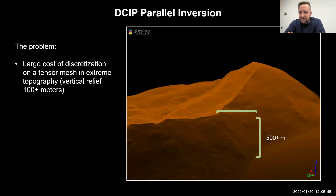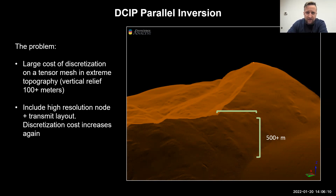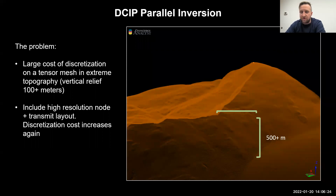Diaz's acquisition system is a distributed 3D DCIP system. This makes it particularly useful in extreme topographies — we just have to lay out the configuration once, come back and pick it up, going over multiple mountains or one big mountain. With a topography change of 100-plus meters, we already have a large cost in discretizing just for the vertical relief. Combining that with a high-resolution node and transmit layout — say two-kilometer lines with 25-meter spacing acquisition resolution — for a fine cell mesh we're down to three-to-six meter cells over two kilometers by 500 by 500 meters. That's starting to be a unique problem for inversion.